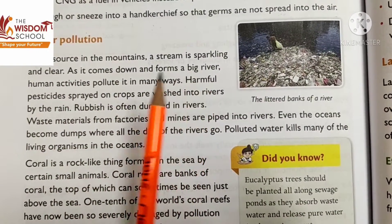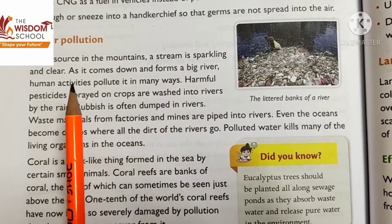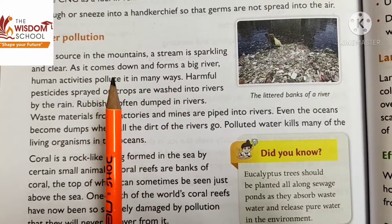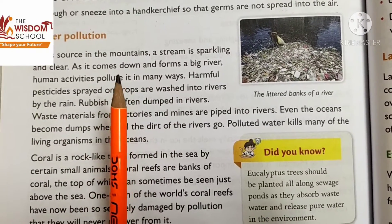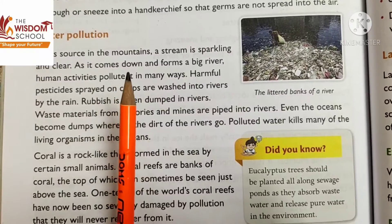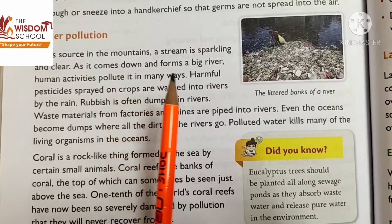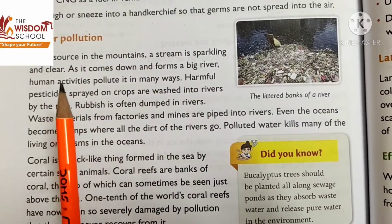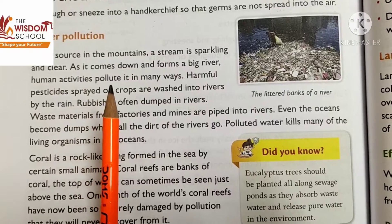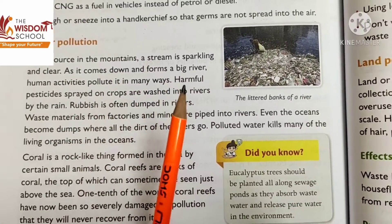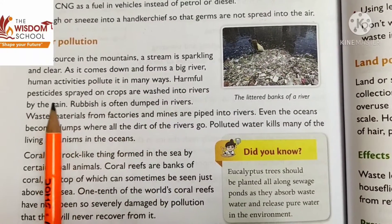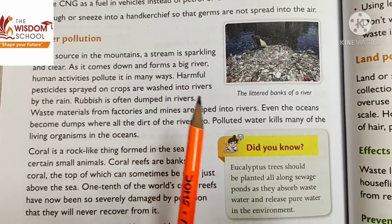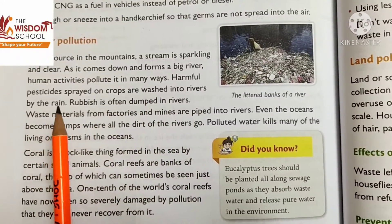As it comes down and forms a big river, human activities pollute it in many ways. Harmful pesticides sprayed on crops are washed into rivers by the rain.